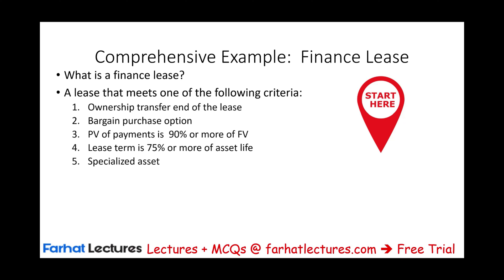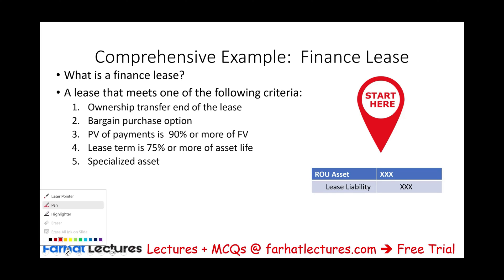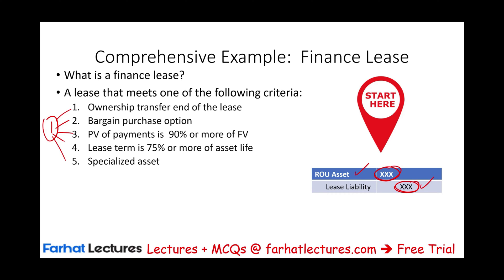We only have to meet one of the five criteria. As long as the lease meets one of those, if we meet more than one, that's fine, but we just have to meet one. If that's the case, the lessee will debit a right-of-use asset and credit a lease liability. In the prior session we figured out how to compute what's included in the lease liability and the right-of-use asset.